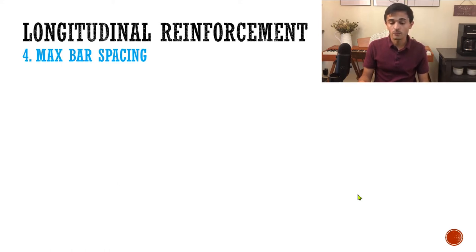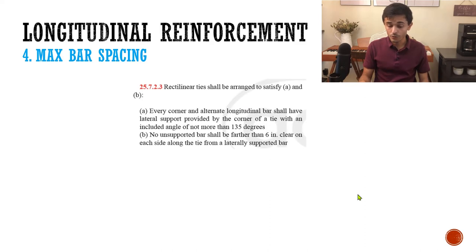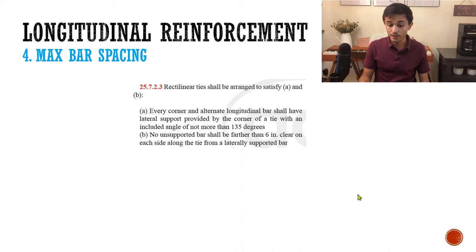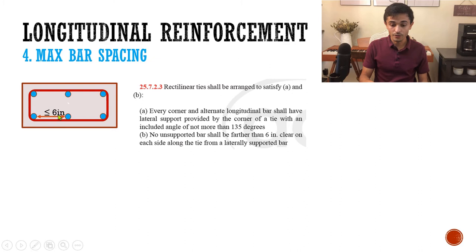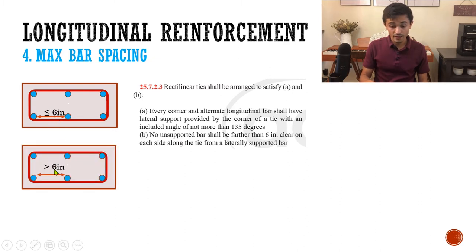Now what's the maximum bar spacing? The code states that no unsupported bar shall be farther than six inches clear on each side along the tie from a laterally supported bar. That means the clear spacing between a supported corner bar and an unsupported bar — one with no support on the sides — must be less than or equal to six inches. If that distance becomes more than six inches, you need to provide a cross tie to support that bar, and then this spacing can exceed six inches.